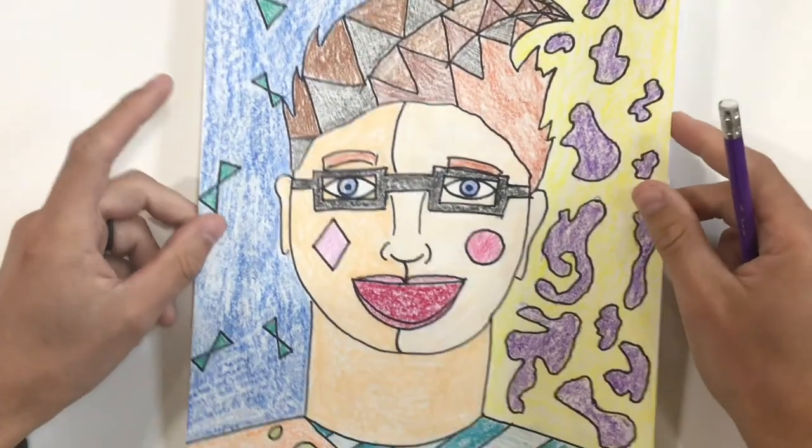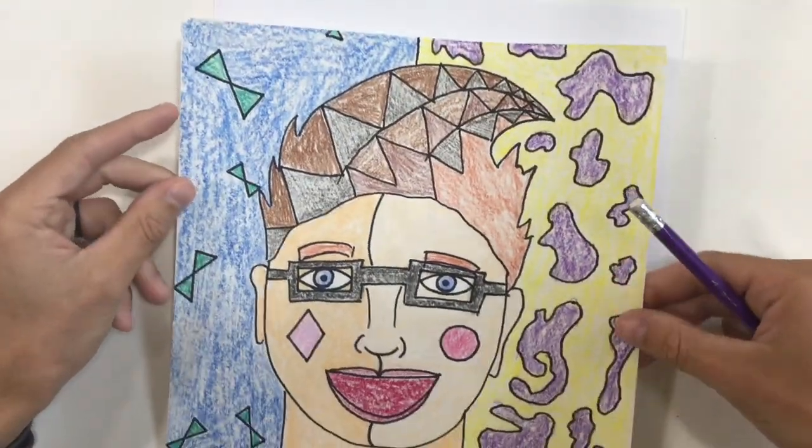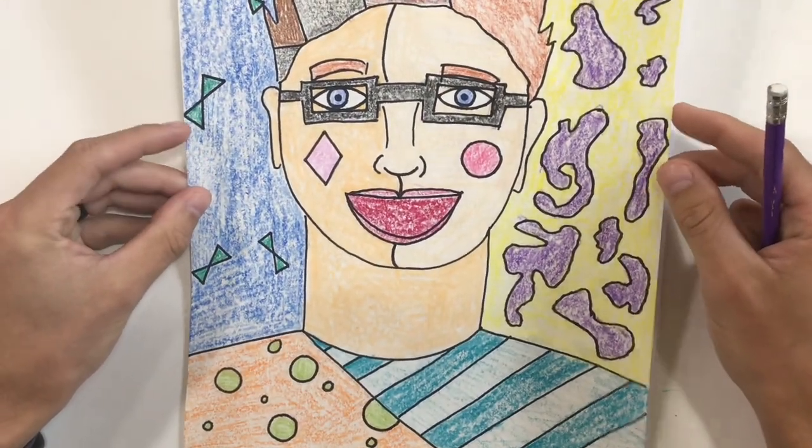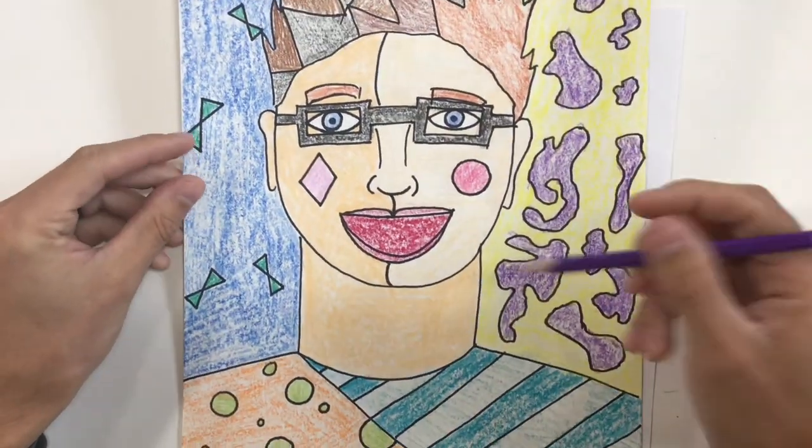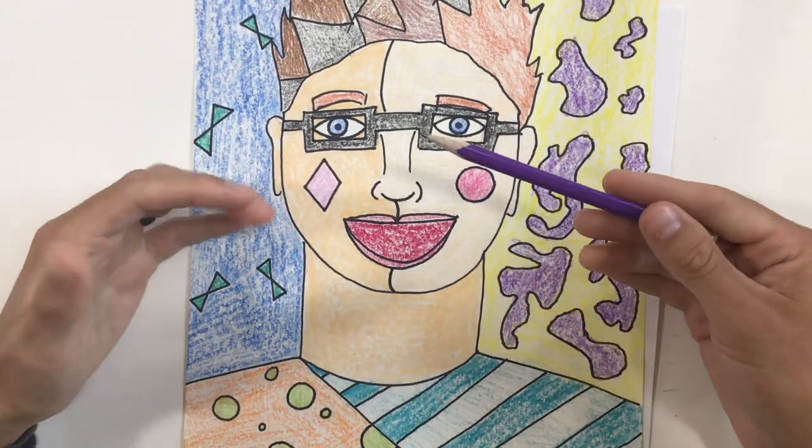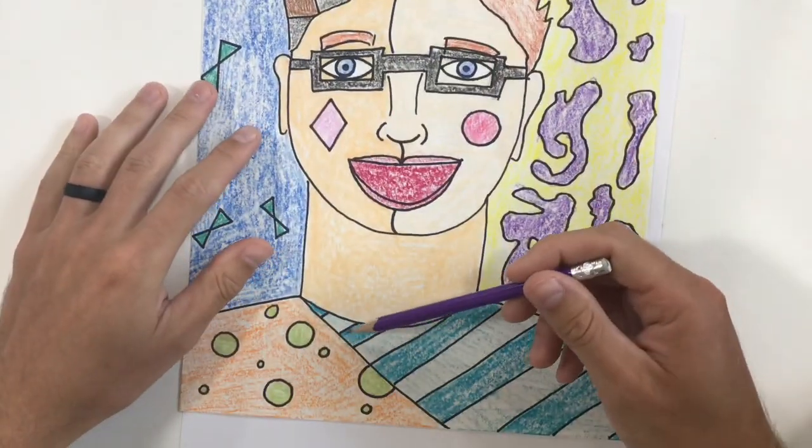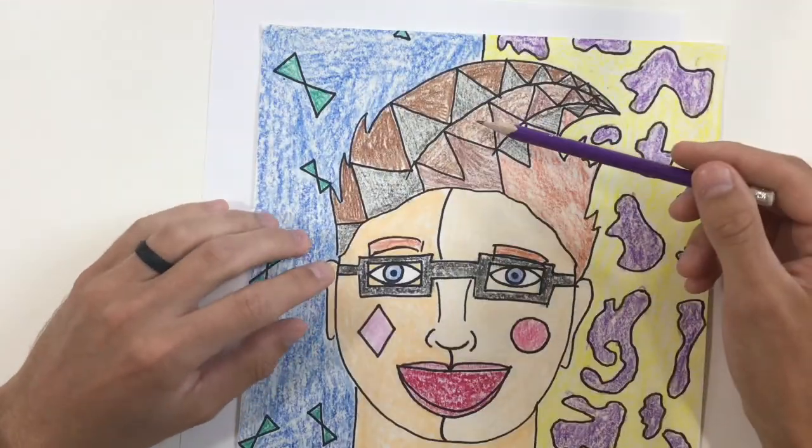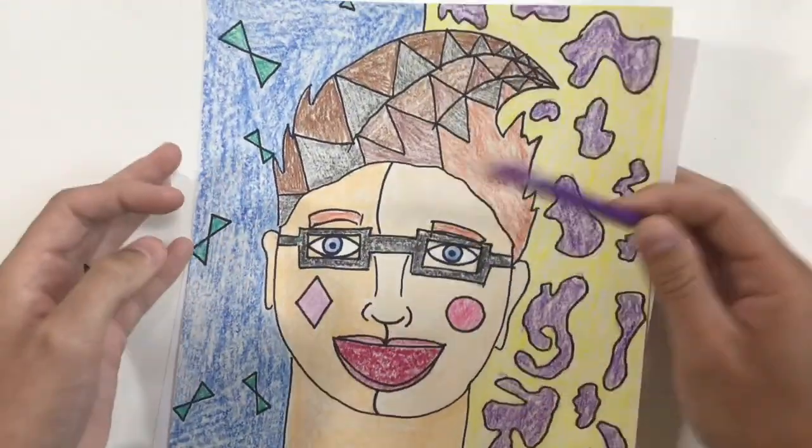So today we are going to be making a self-portrait, which is a drawing of yourself, not somebody else. We're going to be making a self-portrait inspired by Romero Brito. And you might remember that Romero Brito typically has a lot of patterns. He breaks his artwork up into lots of different sections, like we see here on my shirt and the background and the hair. So we'll be making something inspired by him.